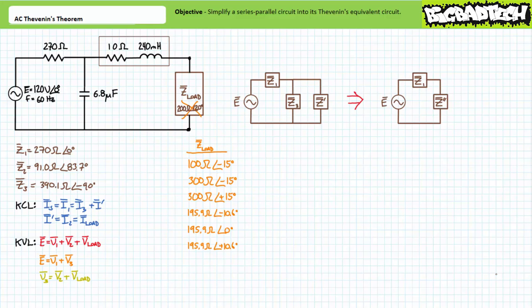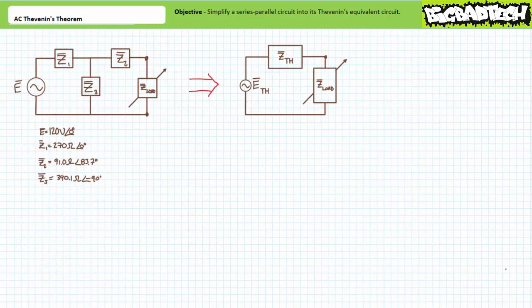Do you see the point I'm driving at? Every time ZLOAD changes, you change the whole circuit and it necessitates another complete series-parallel circuit analysis. This is a serious drag and there has got to be a better way. The better way is with Thevenin's theorem.